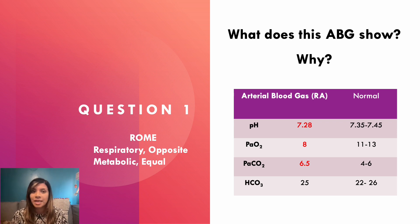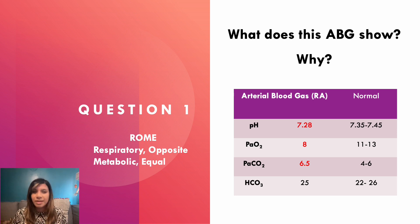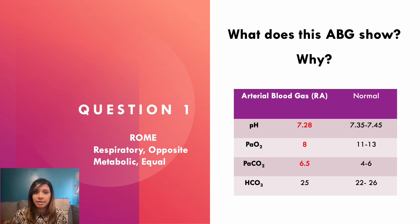For a COPD patient with this pattern, we could say they don't normally retain CO2, so we'd aim for sats above 94% as usual. Other causes of this pattern include anything reducing oxygenation: pneumonia, pneumothorax, heart failure, or an asthma attack. Always look at the pH first, then consider it in relation to the pCO2 or the bicarbonate.